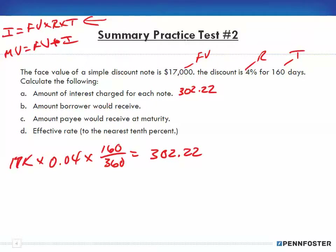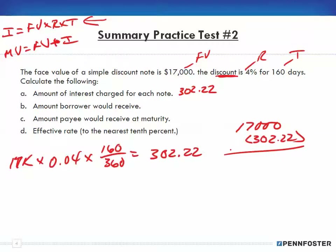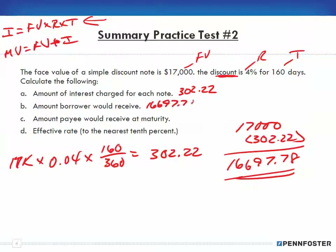The amount the borrower would receive: remember, this 4% is a discount, so if the face value is $17,000 and we're discounting it by $302.22, the borrower would receive $16,697.78. That's the amount the borrower would receive.